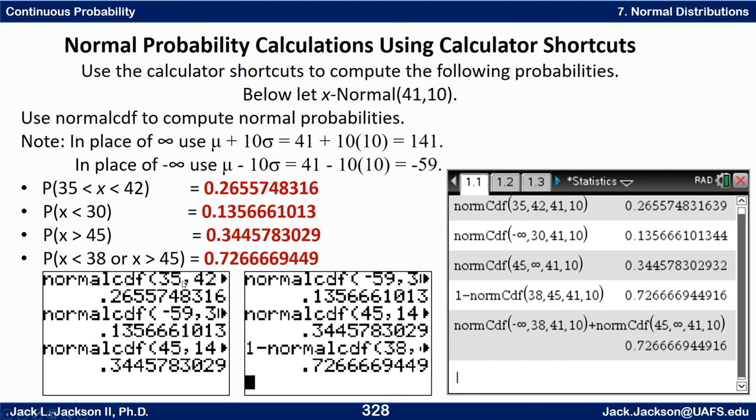Between these two, probably the easiest way to do is one minus this, it's not a between it's outside, so probably the best way to do is one minus the inside. So we could do one minus normalcdf from 38 to 45, so 38 comma 45 comma 41 comma 10 but do one minus that and we get that. Here it is on the Inspire, you can see the parameters and what's in the parentheses here is exactly what's in the parentheses here in the same order except that when there's a negative infinity here on the 84 I used negative 59 and where there's an infinity I used 141 on the TI-84, otherwise I did exactly the same way.